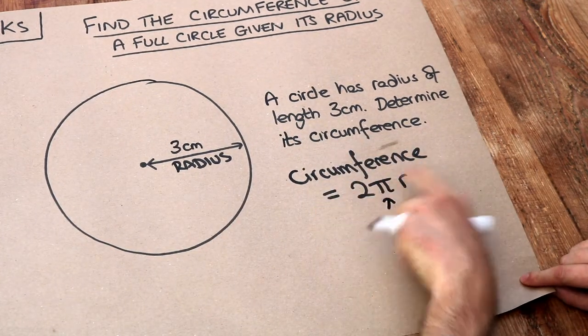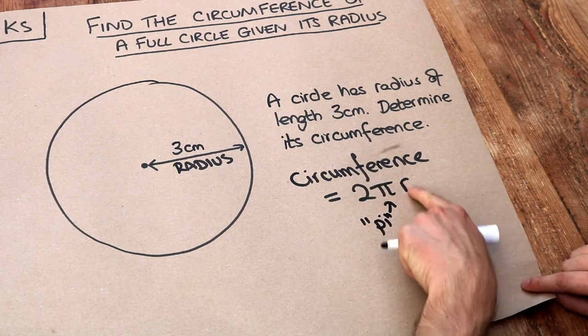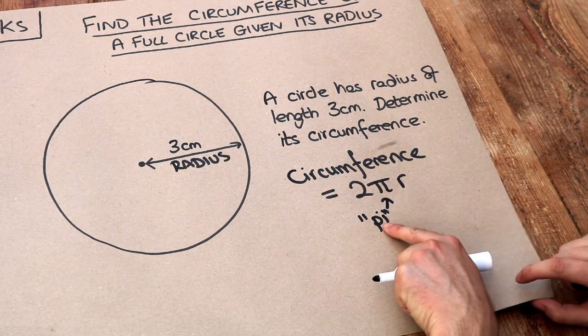So this funny symbol here, that's the Greek letter pi. Just like we use the English alphabet a to z to mean variables, we often use Greek letters as well.